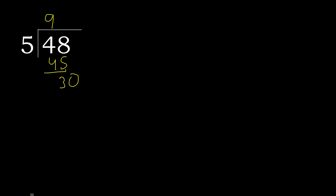Always complete with 0, here with a point. 0 point, 30. 5 multiply by 6 is 30. 30 minus 30 is 0. Therefore finish.